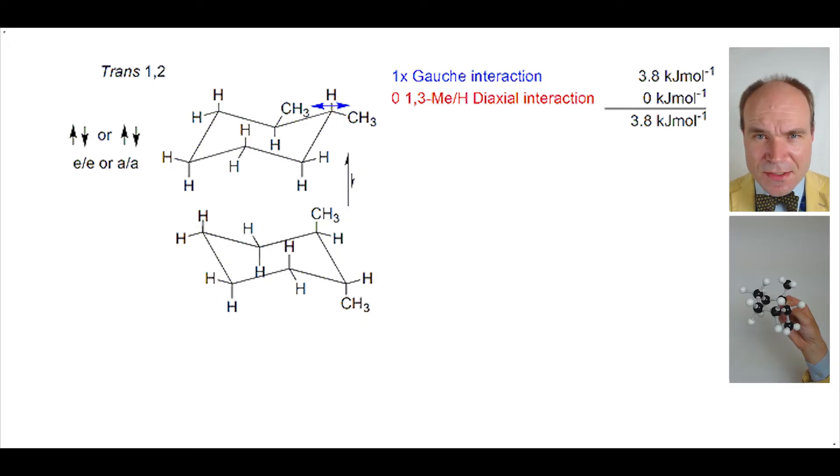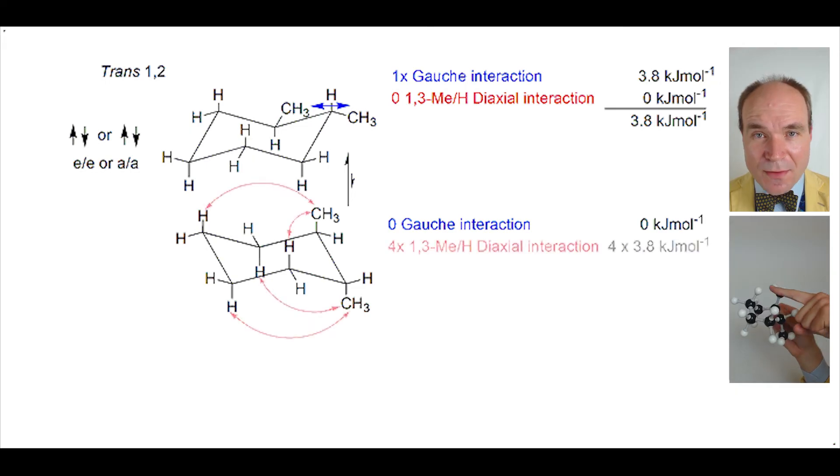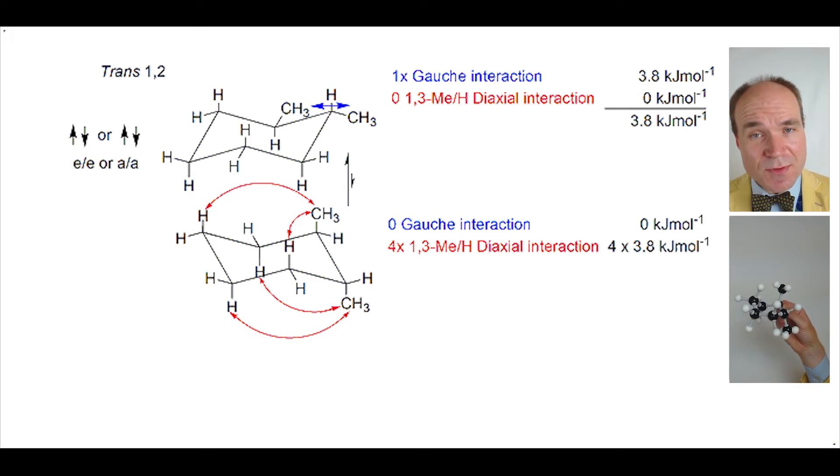What about steric strain present? Now there are no gauche interactions, but we do have 1,3-diaxial interactions. In fact, we have four 1,3-diaxial methyl-hydrogen interactions. One of those would add 3.8 kilojoules per mole, so four add 15.2 kilojoules per mole. The total steric strain adds energy of 15.2 kilojoules per mole for this chair conformation.